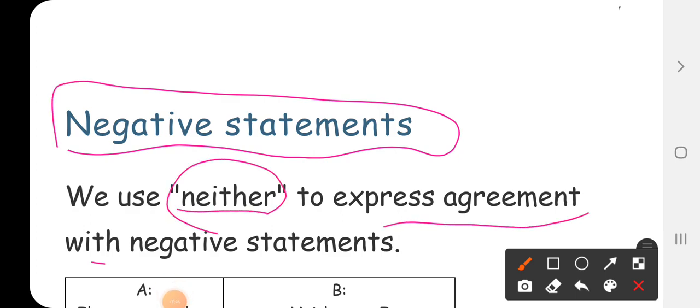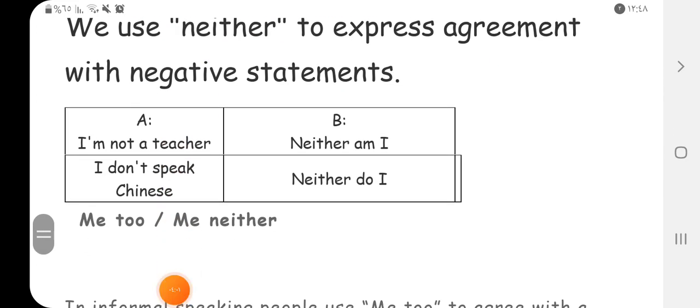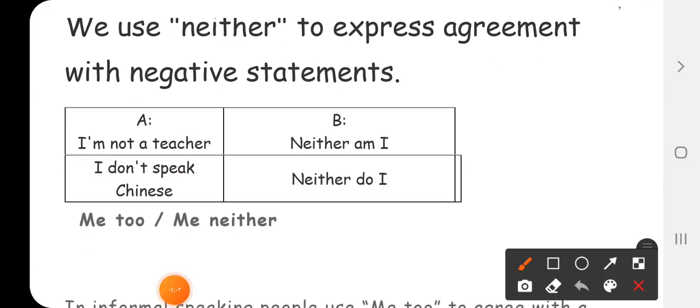Now let's move to negative statement. We use neither, neither to express agreement with negative statement. Look at the example: I am not a teacher. Here we have negative statement, okay?